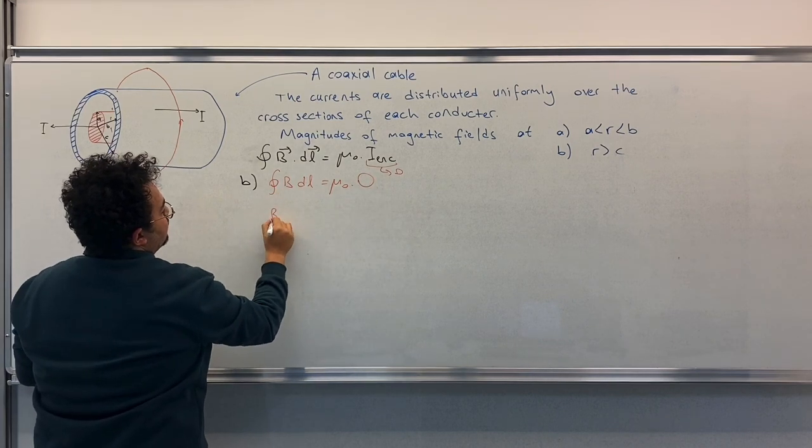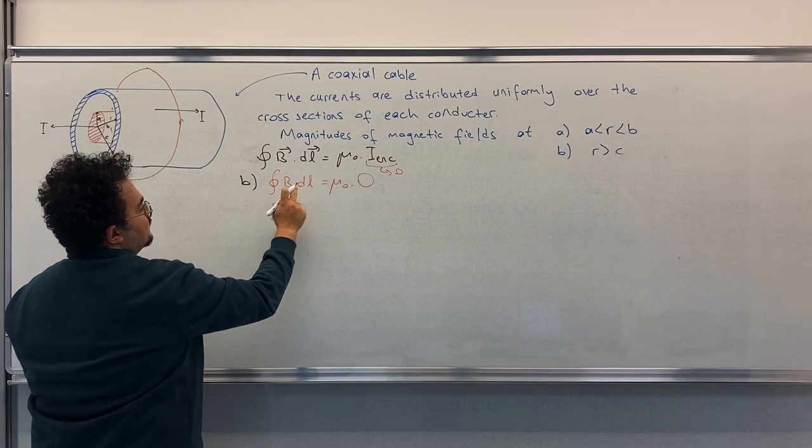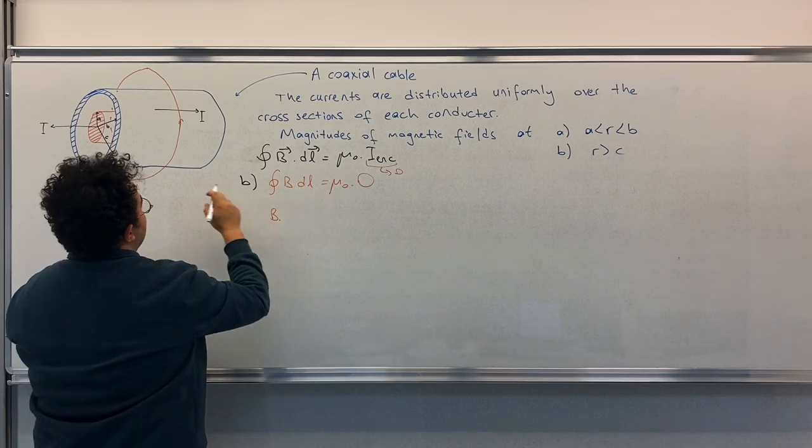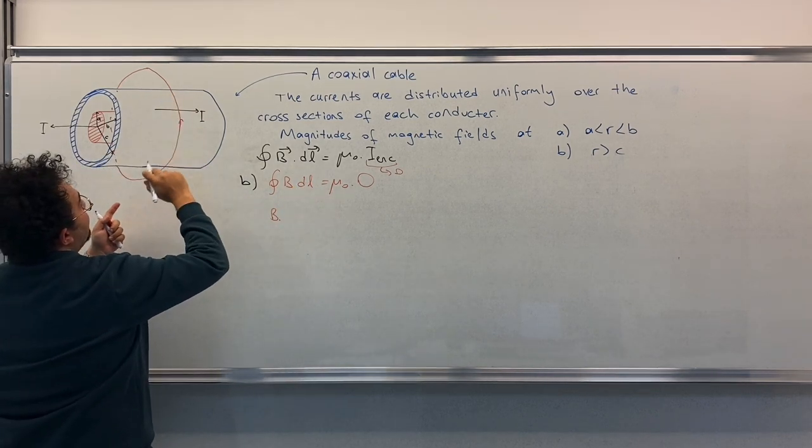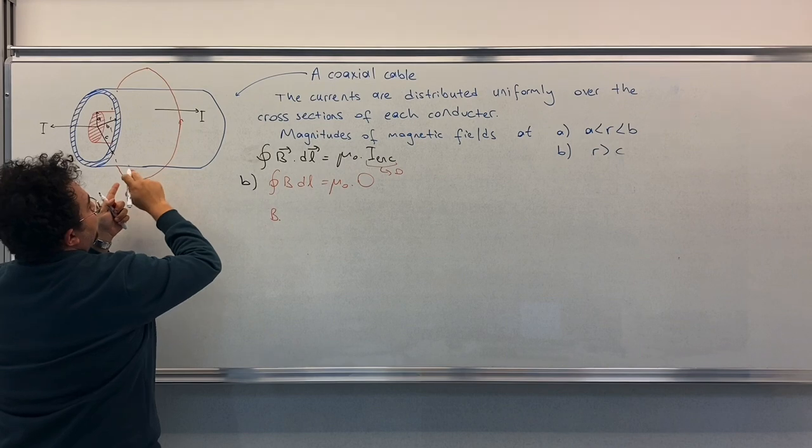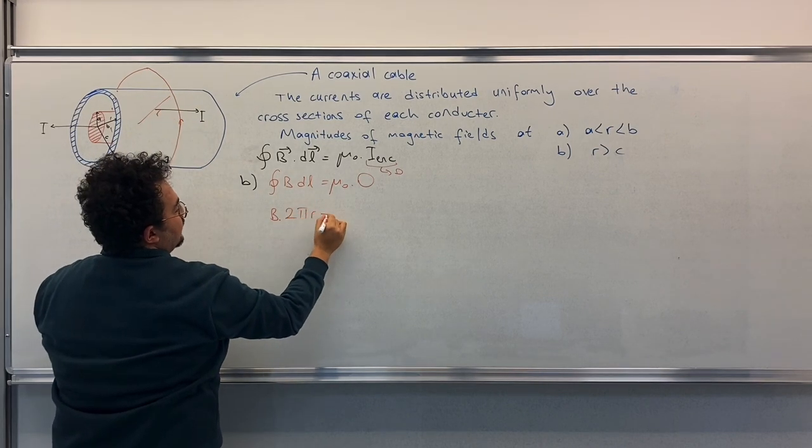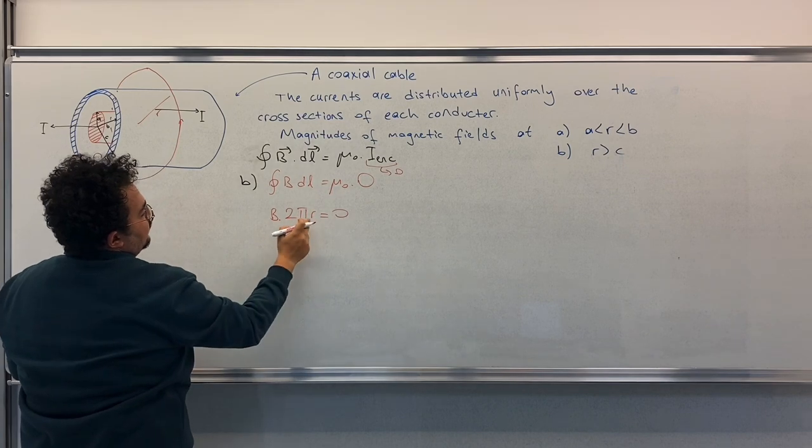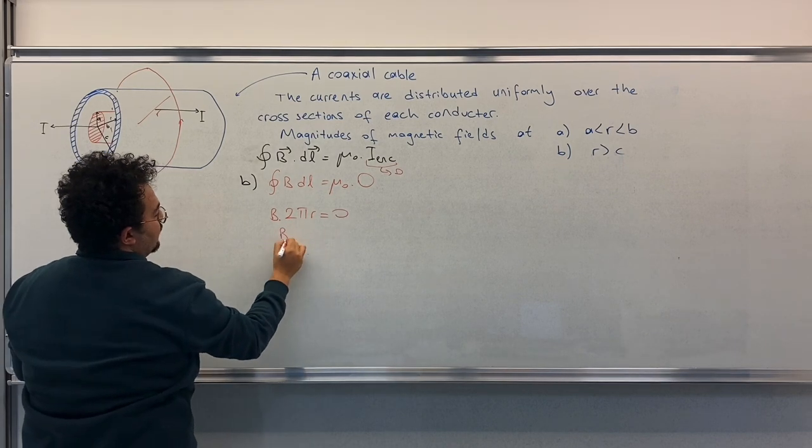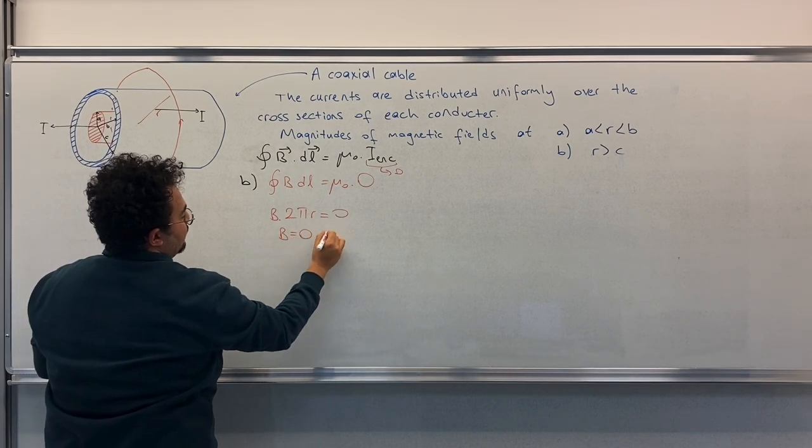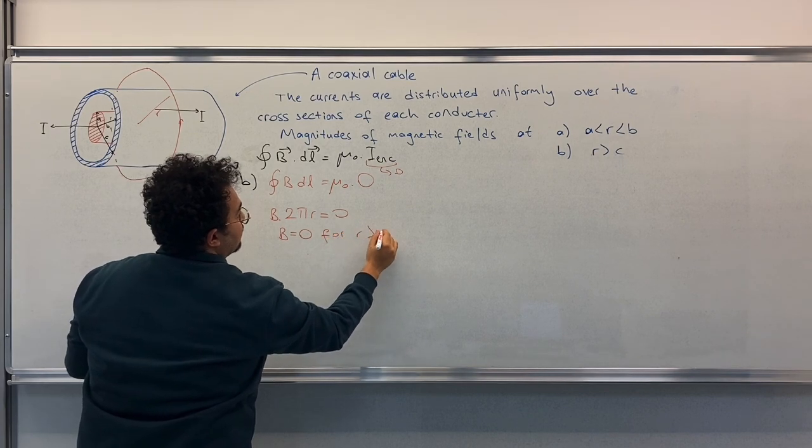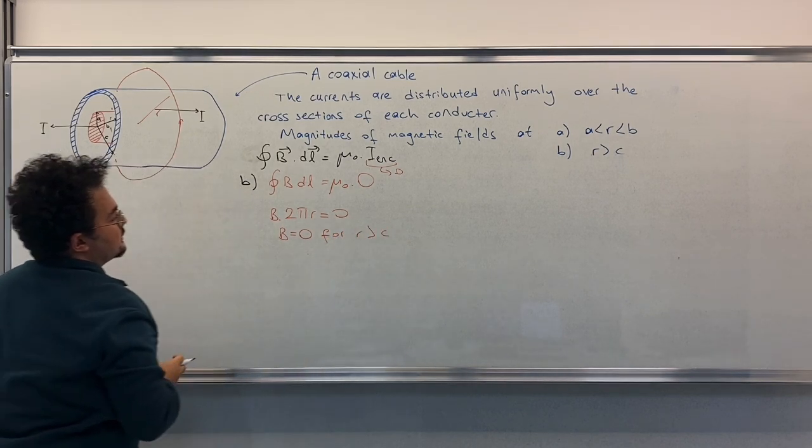And this goes out B times integral over DL, which is just 2πR equals to zero. And you know, R is not zero. So B equals to zero for R, and that is bigger than C.